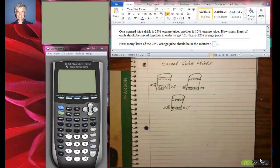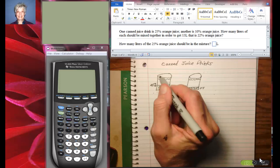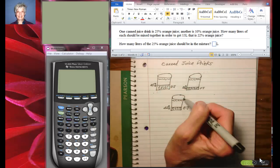One can juice drink is 25% orange juice. Another is 10% orange juice. Now I've kind of already started this problem. These, believe it or not, are supposed to be containers of orange juice.